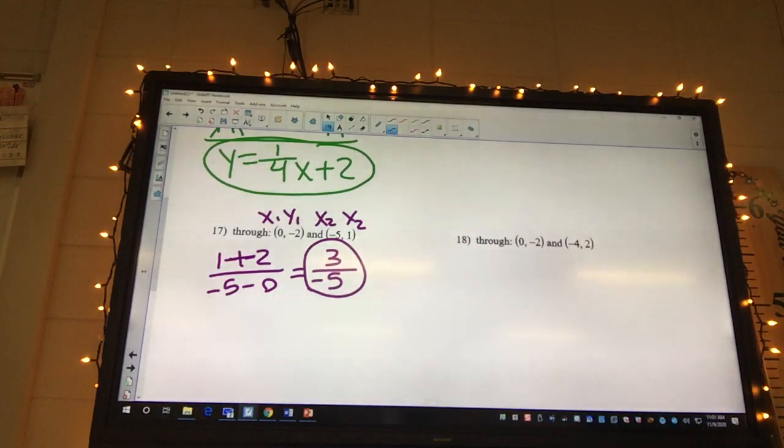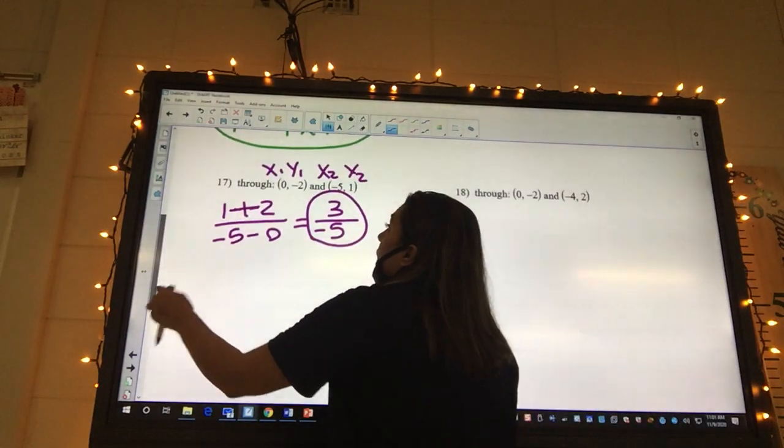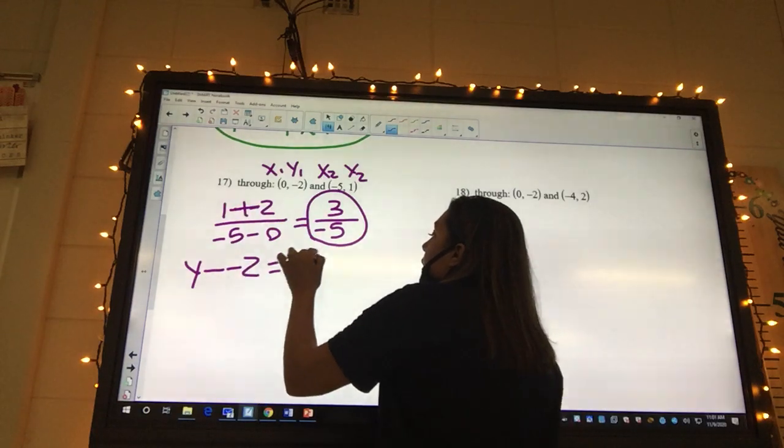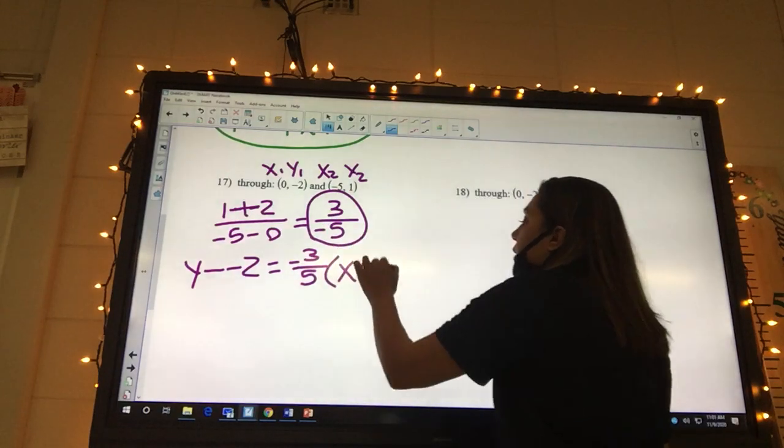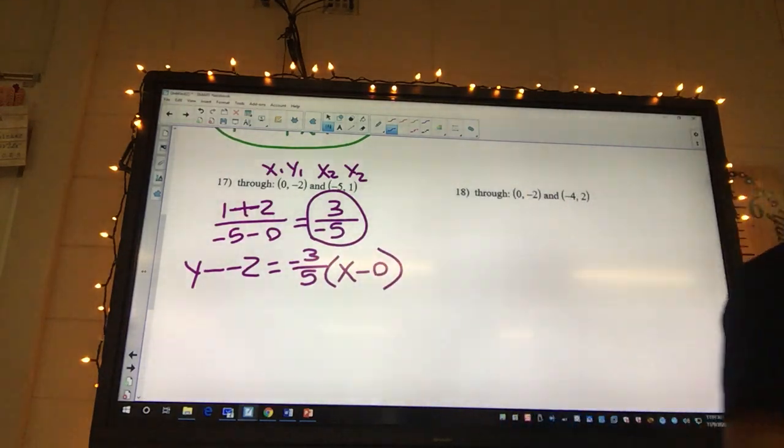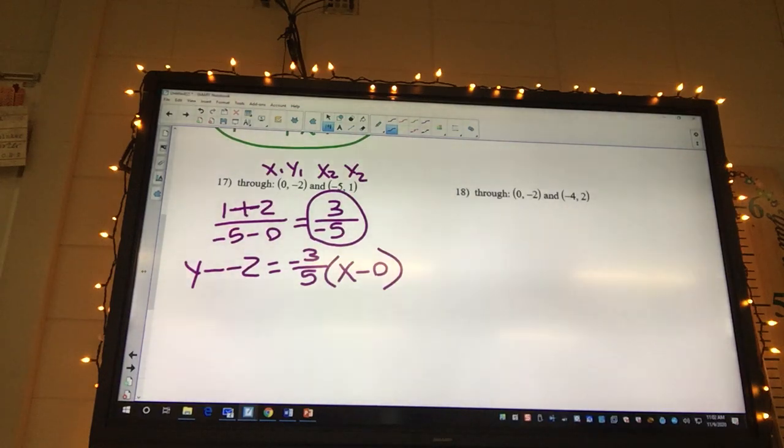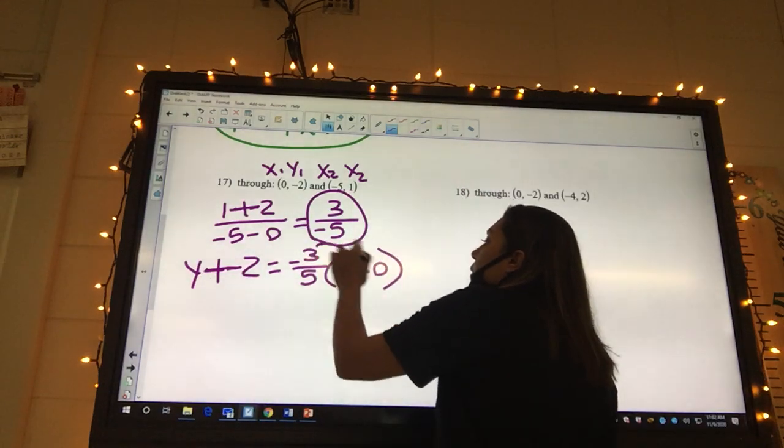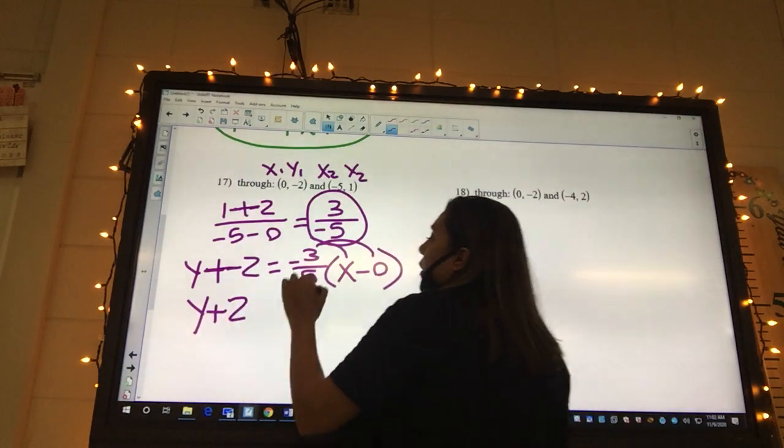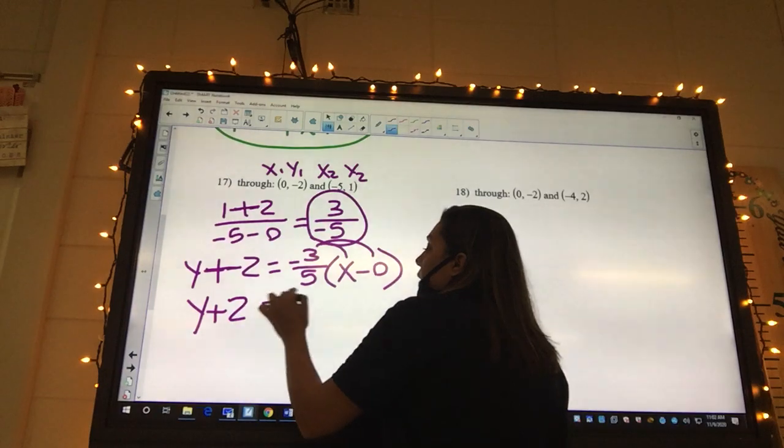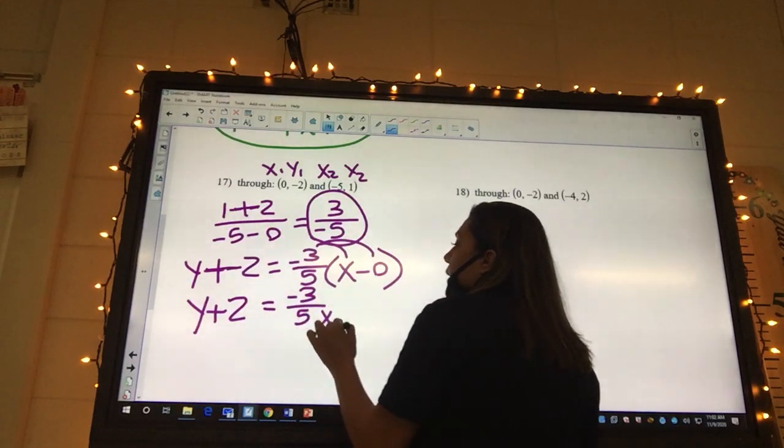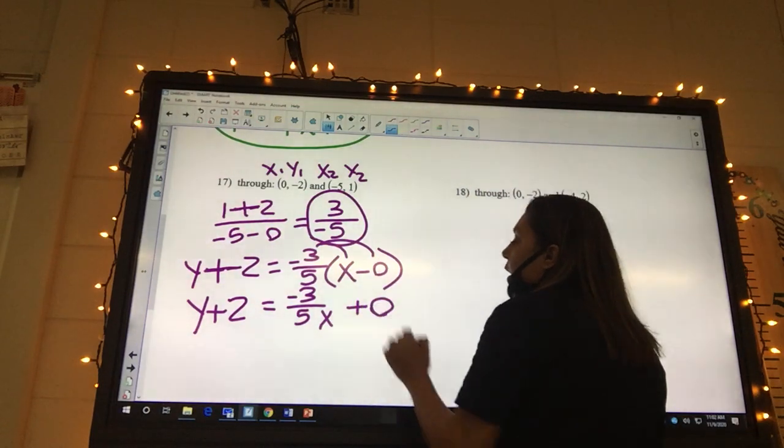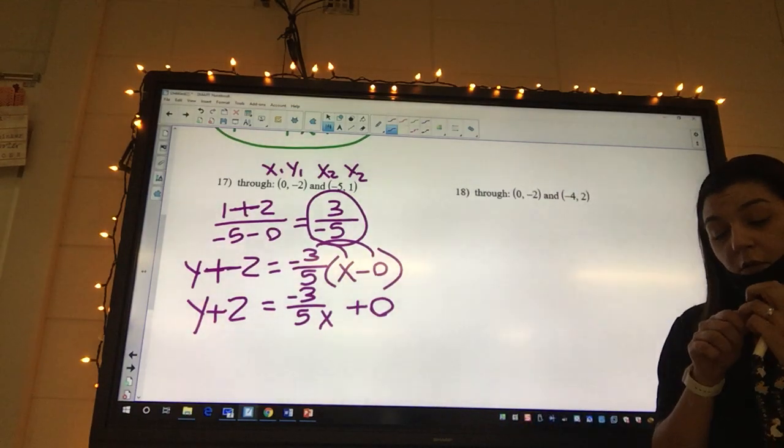Then we gotta do point slope. My point slope is gonna be y minus my y1 is negative 2 equals negative 3 over 5 times x minus x1 is 0. Change it to a plus then distribute. So I'm gonna have y plus 2 equals negative 3 over 5x. Negative 3 over 5 times 0 is just 0. I would definitely put the 0 because then you know what to subtract from.